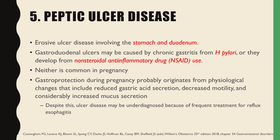Next is peptic ulcer disease. This is an erosive ulcer disease that usually involves the stomach and the duodenum. Gastroduodenal ulcers may be caused by chronic gastritis from H. pylori or may develop from NSAID use. Neither is common in pregnancy. Gastroprotection during pregnancy probably originates from physiological changes that include reduced gastric acid secretion, decreased motility, and considerably increased mucus secretion.